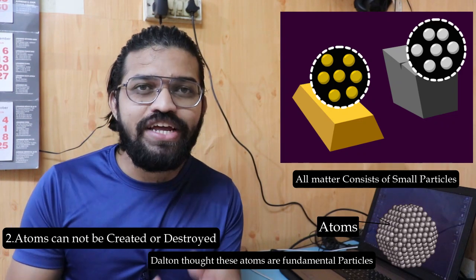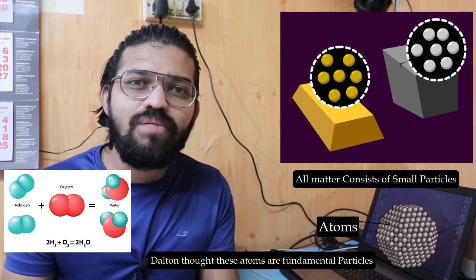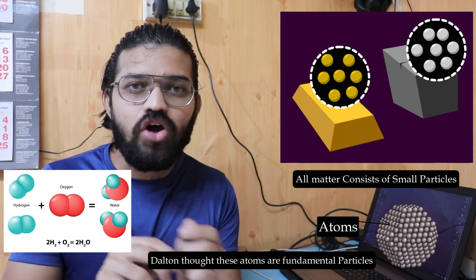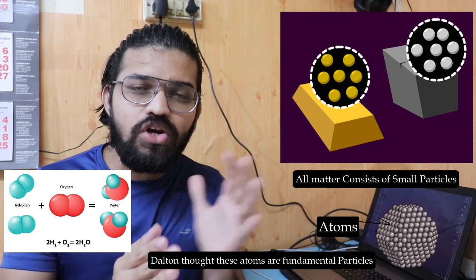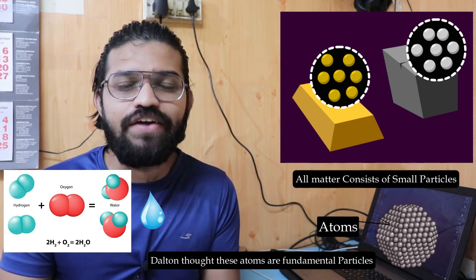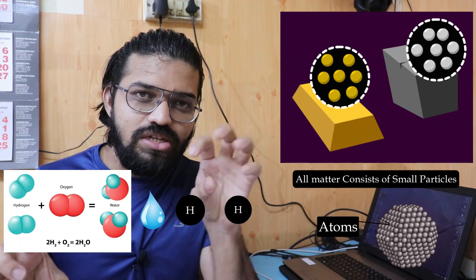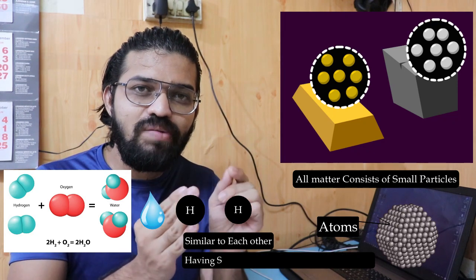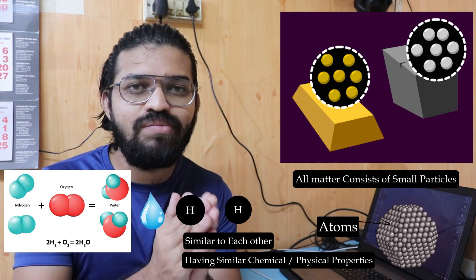The second point: atoms cannot be created or destroyed in any chemical reaction. Whenever a chemical reaction occurs, atoms rearrange themselves to form a new compound or molecule, but they cannot be created or destroyed. For example, hydrogen and oxygen combine to form water (H2O). The two hydrogen atoms are identical in atomic mass, structure, and characteristics.